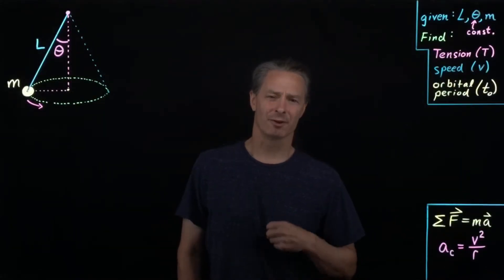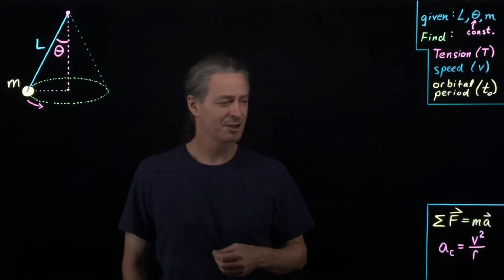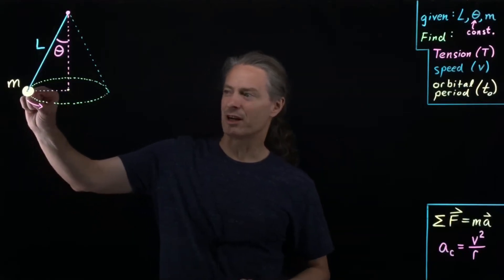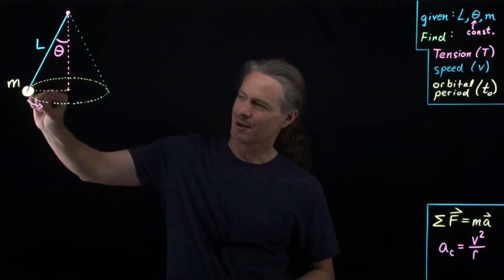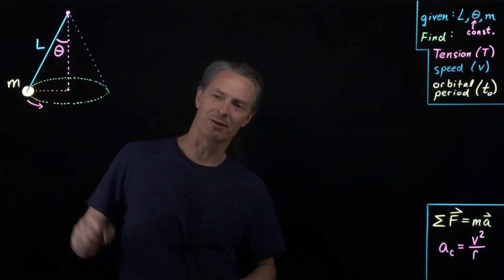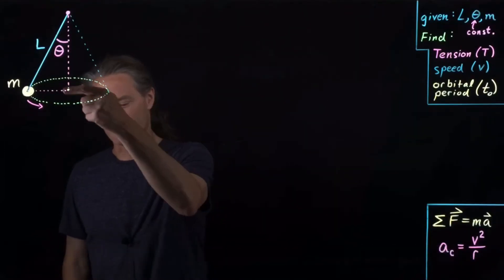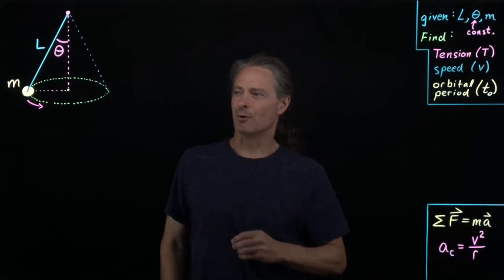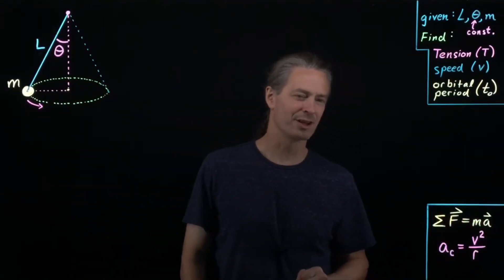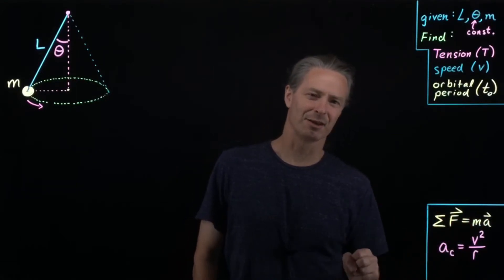Before we start, let's think about how to solve this. Tension is a force, so we need a force analysis — that calls to mind Newton's second law. For speed, the object is traveling in a circular path, so it experiences a centripetal acceleration pointing from the mass toward the center of the circle. We can relate the centripetal acceleration magnitude to speed and radius through a_c = v²/r. Accelerations relate to forces through Newton's second law, so again that points to Newton's second law.